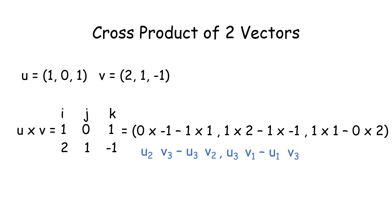Next, we have u3 times v1 minus u1 times v3, which is 1 times 2 minus 1 times negative 1.